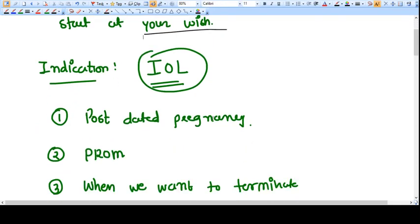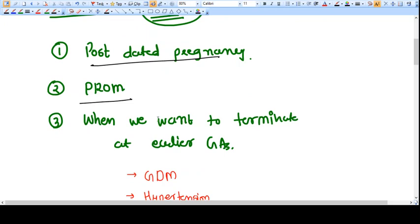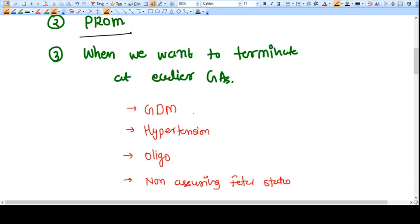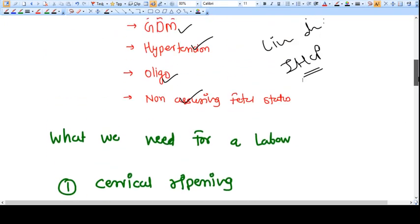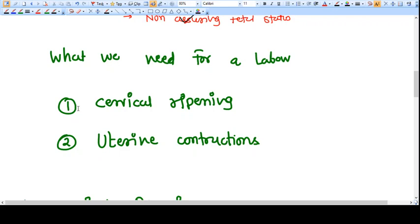The indications of induction of labor: the most common reason is post-dated pregnancy. It can be premature rupture of membranes. When we want to terminate the pregnancy earlier at even 37 weeks or sometimes even 34 weeks because of medical conditions like GDM, hypertension, oligohydramnios, not very assuring fetal status, or liver disease like IHCP (intrahepatic cholestasis of pregnancy). In all these indications we need to terminate the pregnancy earlier, so we need to do an induction of labor.